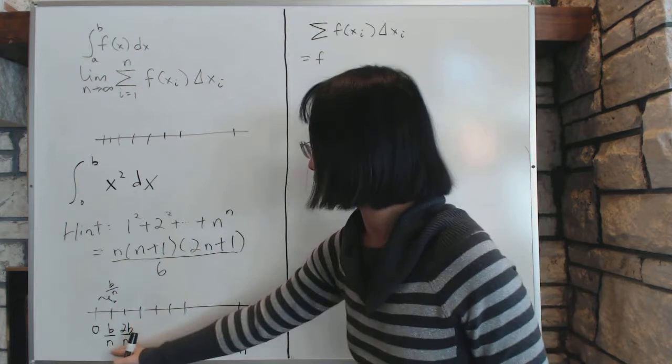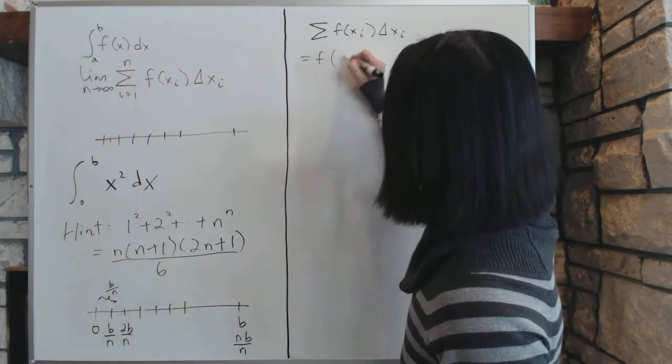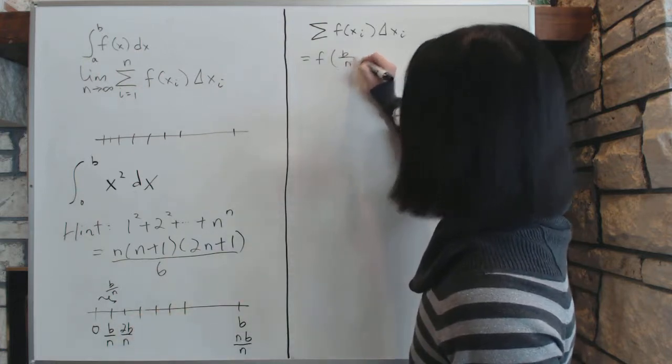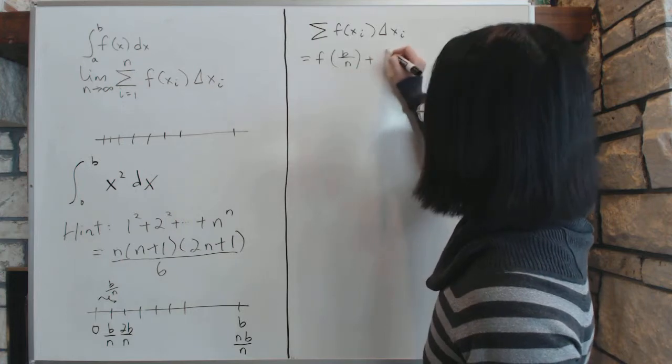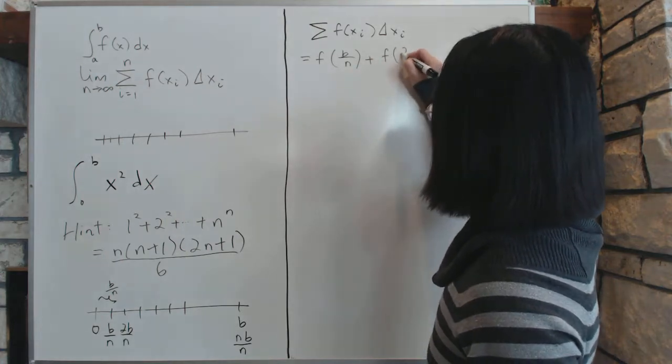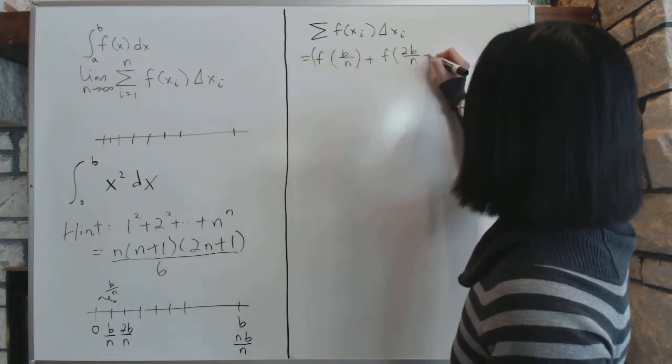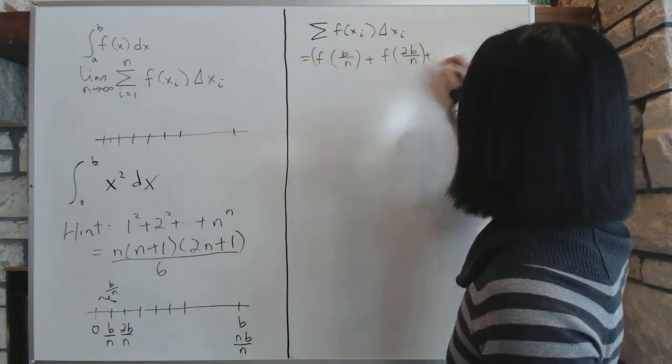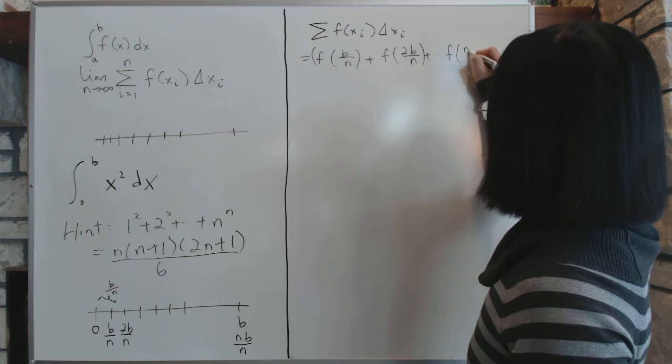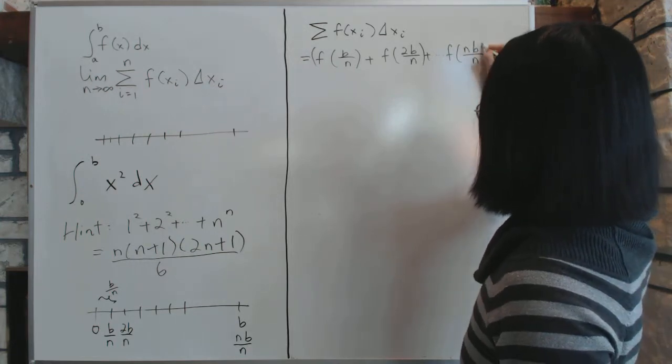we'll take the end point, is f of b/n, b/n plus f of 2b/n. Okay. All this stuff, all the way up to f of nb/n to the end point, this whole thing, each one will multiply by Δxi,